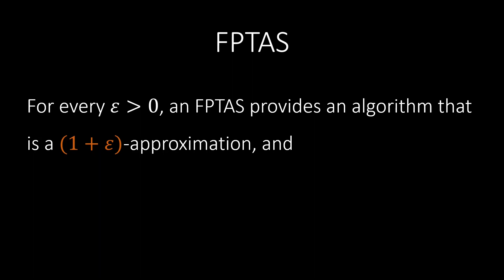An FPTAS provides an approximation for any epsilon greater than 0. For instance, it can find a solution that is only a hundredth of a percent away from the optimum, or even only a millionth of a percent. This is what we meant at the beginning of the video when we said that an FPTAS can approximate the solution arbitrarily close.